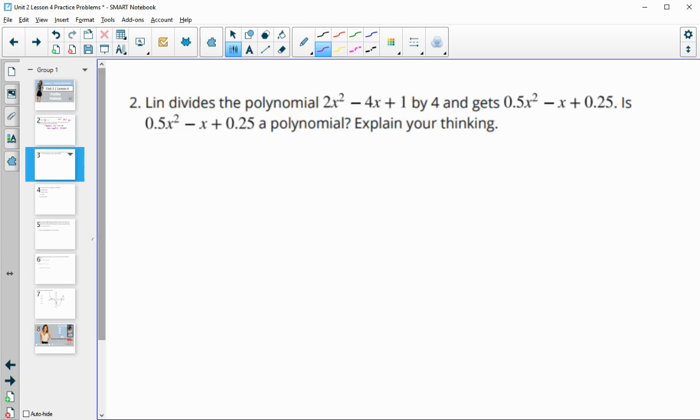Number two: Lynn divides the polynomial 2x² - 4x + 1 by 4 and gets 0.5x² - x + 0.25. Is this a polynomial? Explain your reasoning.